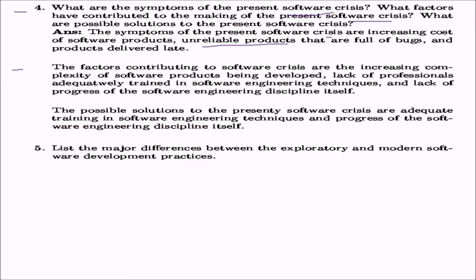The factors contributing to the software crisis include increasing complexity of software products and professionals not being properly trained in software engineering techniques. The progress of software engineering as a discipline is also a factor — people talk about compiler design and architecture, but software engineering is a very important basic building block. The possible solutions are giving adequate training in software engineering techniques and advancing the software engineering discipline itself.